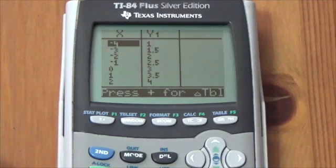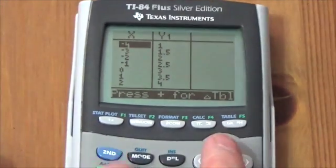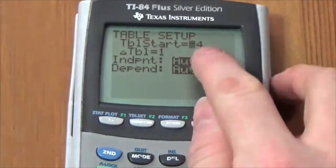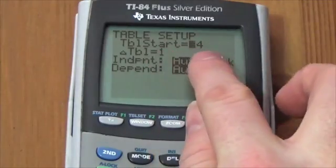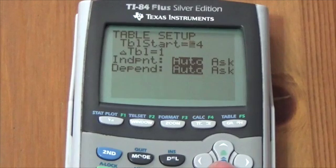Now, something else that I can do here, I can go into second table set. Now, we had gone in here before to identify what happens when you change the table start and the delta table, what that goes up by. But here's another thing that you can do.